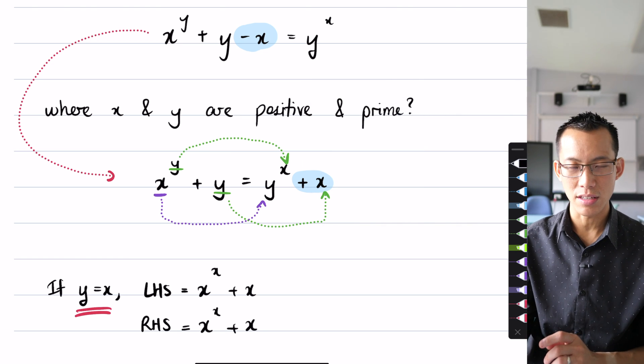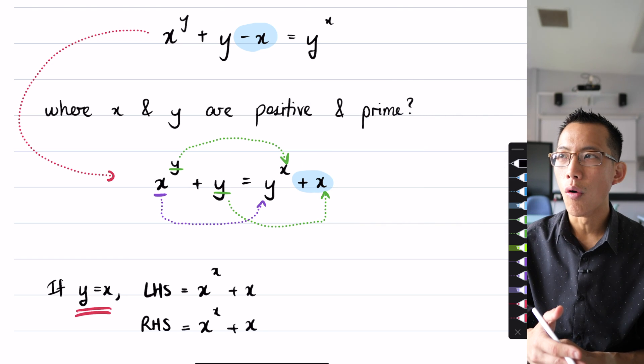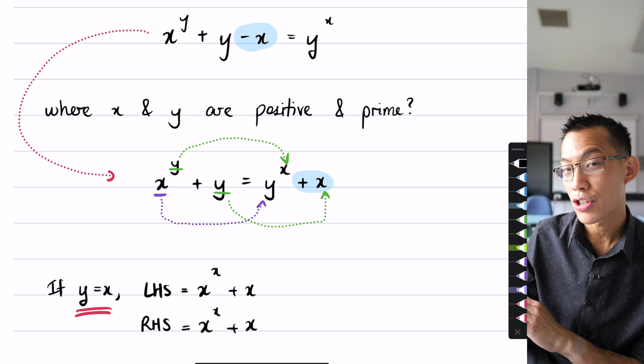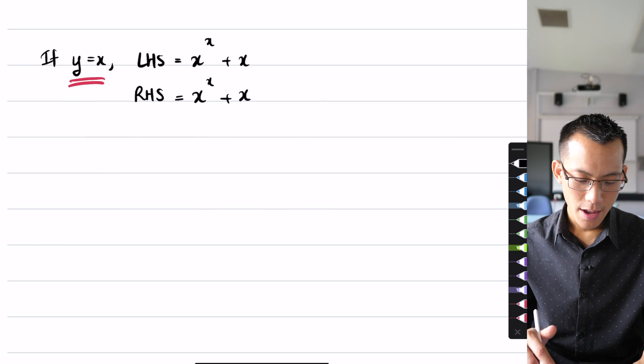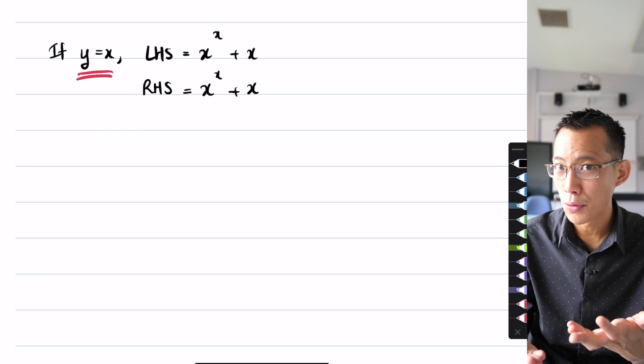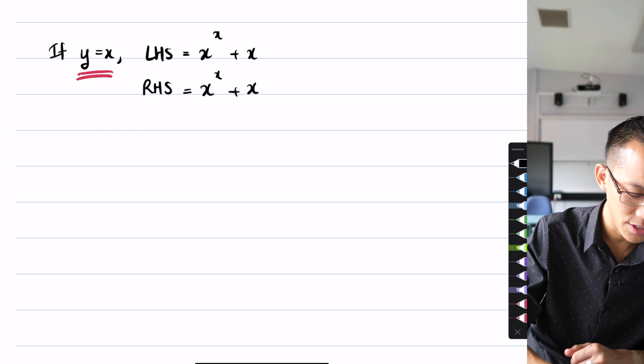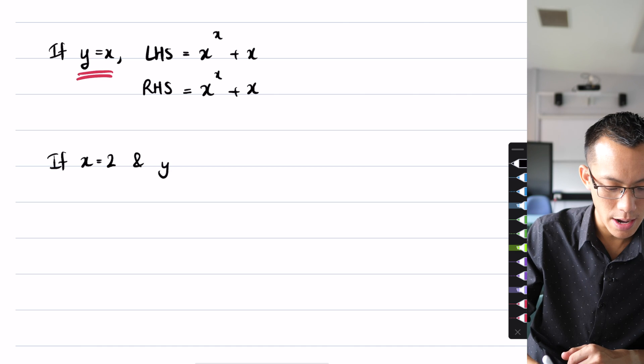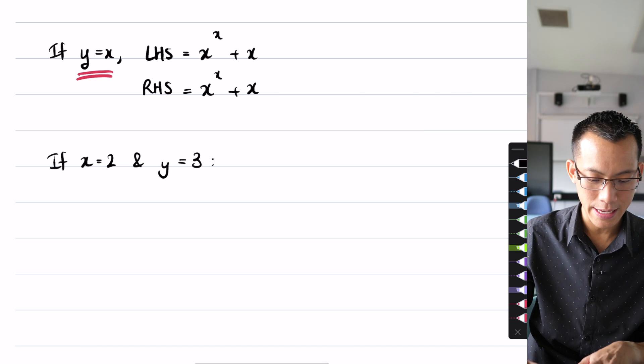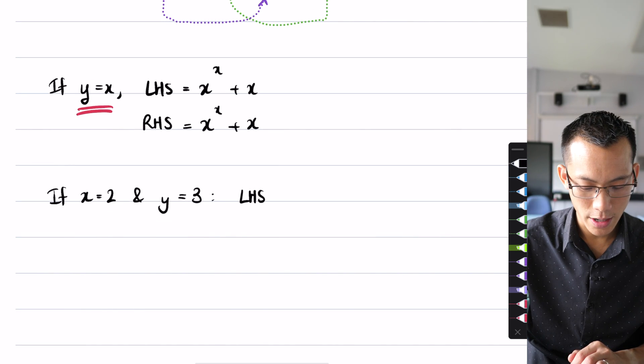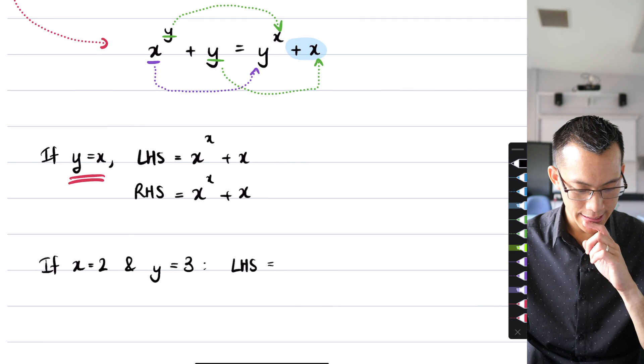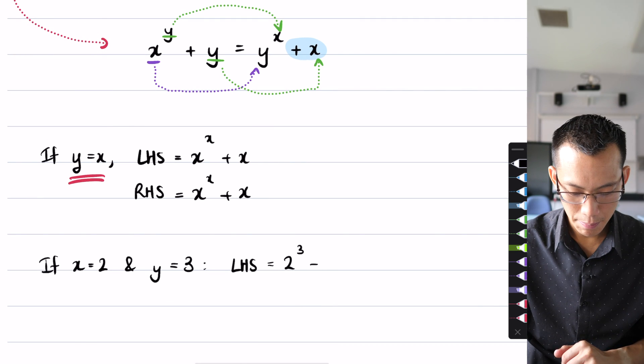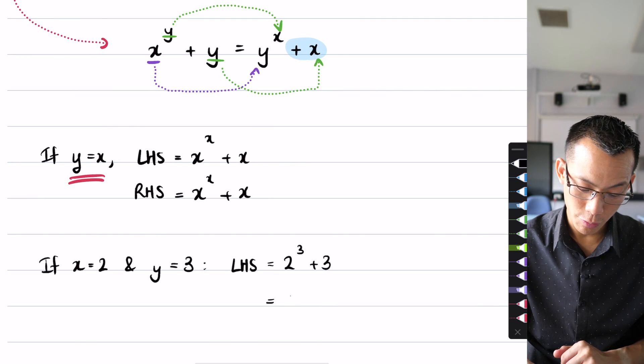If I made y two and x equal to three, an interesting thing happens when you just put in these first two prime numbers. Let's suppose x equals two and y equals three. What do we get on the left hand side? I'm going to get two cubed plus three. Two cubed is eight, add three and you get 11.